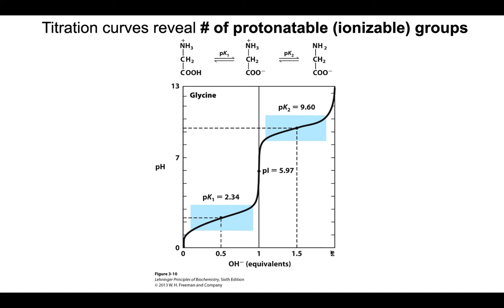From one to two equivalents, we're titrating out the amino group. Half of that range is 1.5 equivalents; going up to the curve and over shows a pH of about 9.6, meaning the pKa of the alpha-amino group is 9.6. Furthermore, glycine has two discrete buffering regions: one centered around pH 2.34 and one centered around pH 9.6. So it can act as a buffer between about pH 1 and 3.3, and also between pH 8.6 and 10.6.